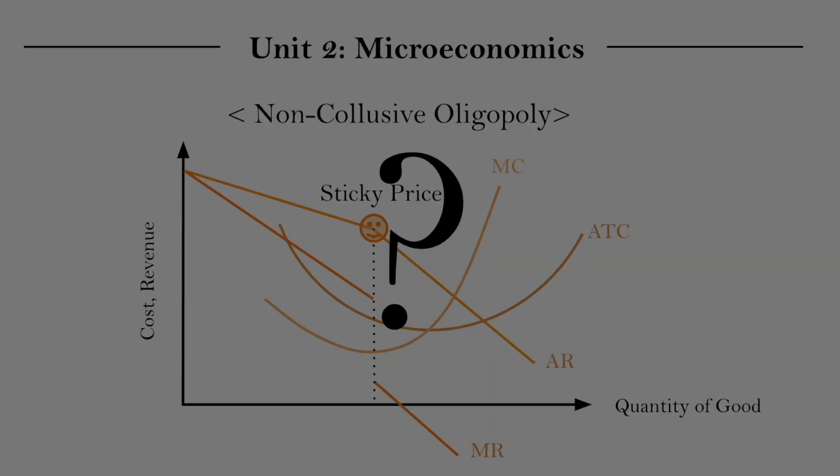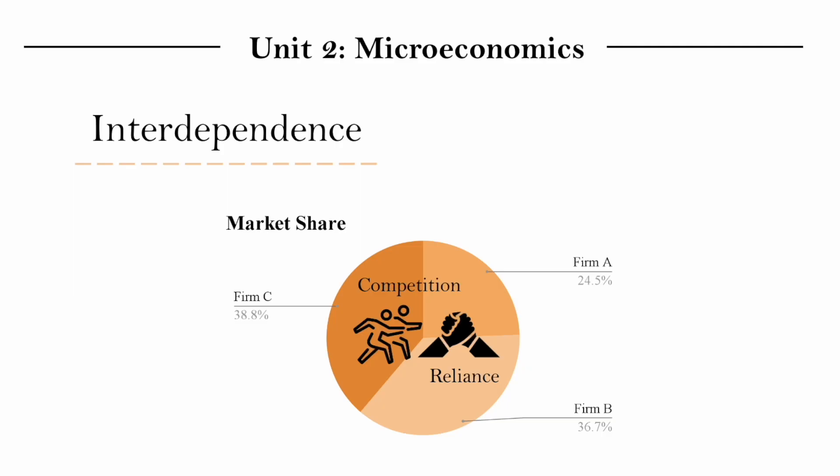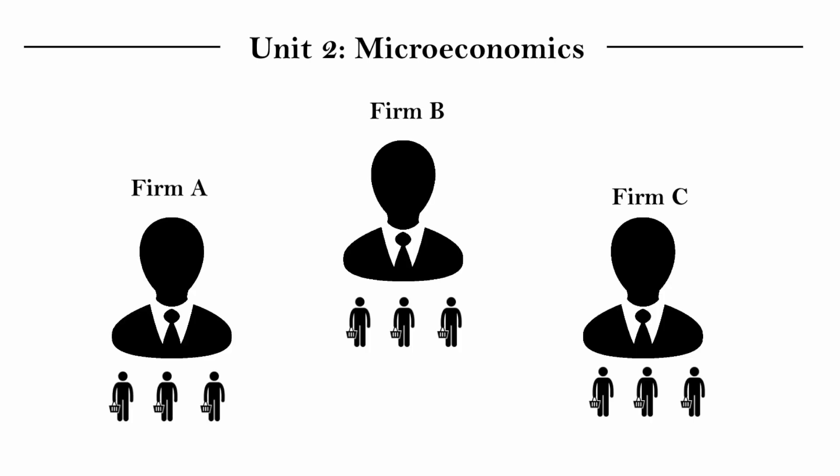At this point, the prices are sticky, which basically means prices in an oligopoly are unlikely to change. But why is that? If you recall the idea of interdependence — that firms are highly competitive and reliant on each other — it makes this easier to understand. This is almost like a game situation where initially you have some peace. But within this peace, if firm A suddenly chooses to lower their price, firm A's product is now cheaper than everyone else's, and some people that used to buy from firm B and C will switch over to firm A.